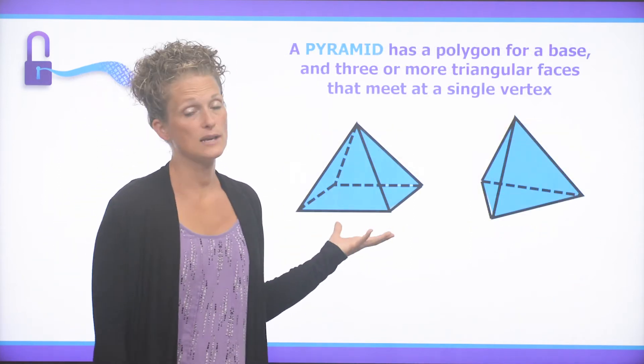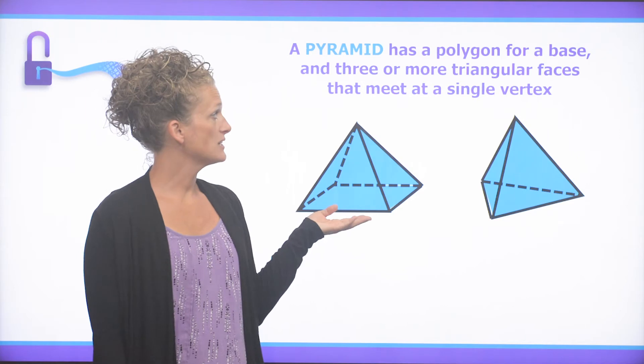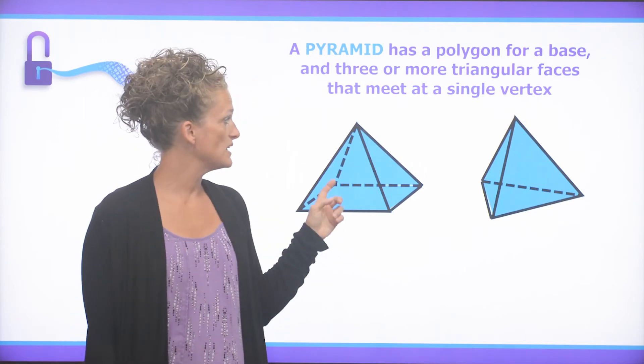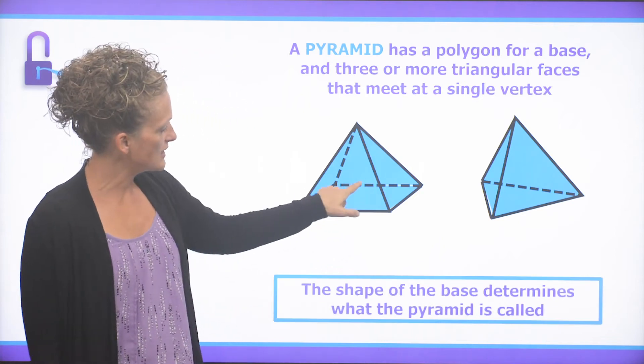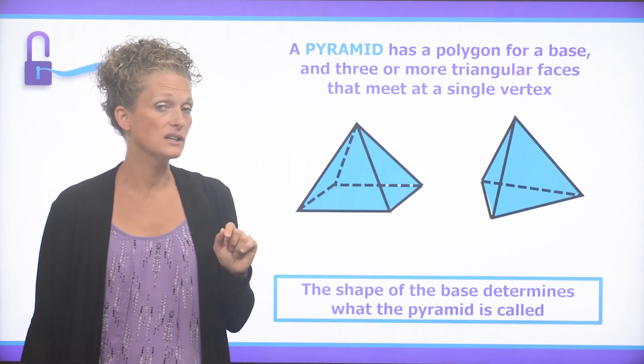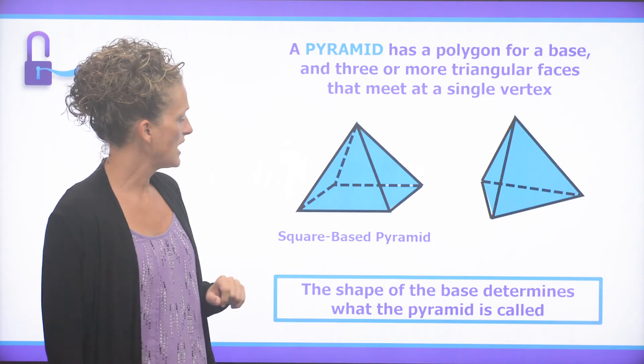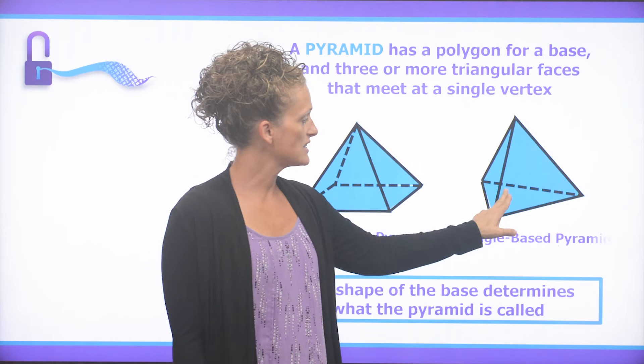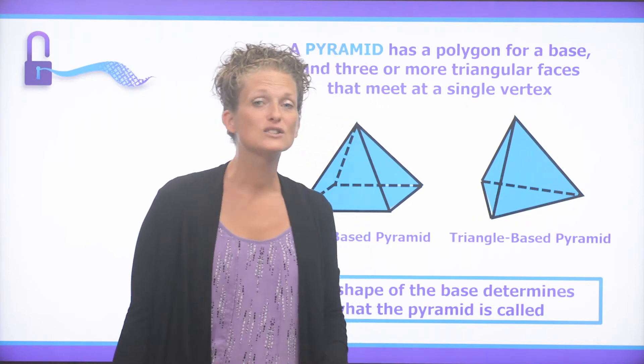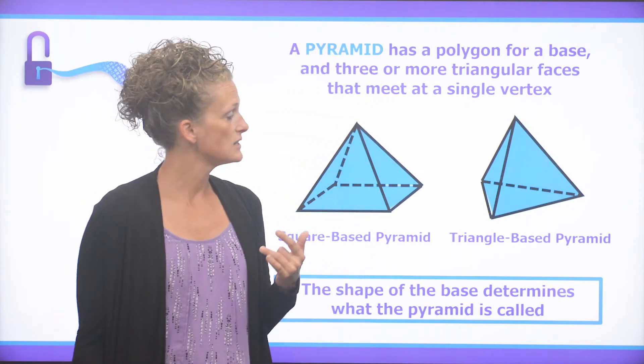A pyramid has a polygon for a base and three or more triangular faces that meet at a single vertex. So the shape of the base, again, determines what the pyramid is called. And this one has a square as its base, so it is called a square-based pyramid. And this one has a triangle as its base, so it is called a triangle-based pyramid.